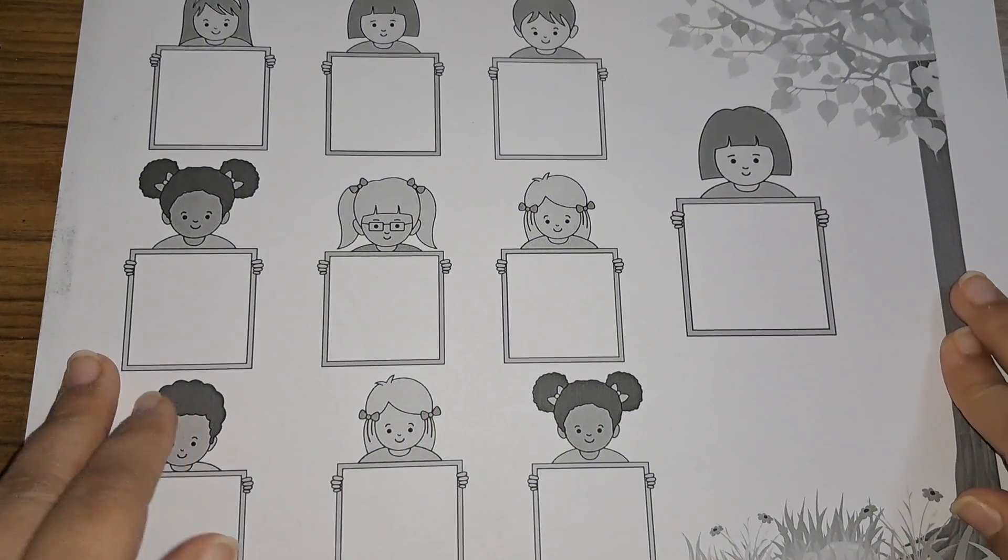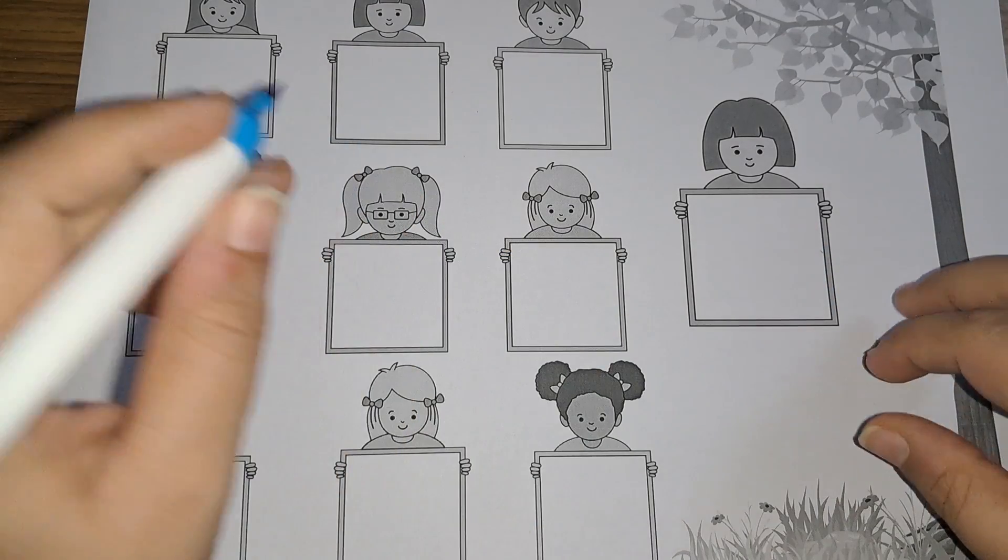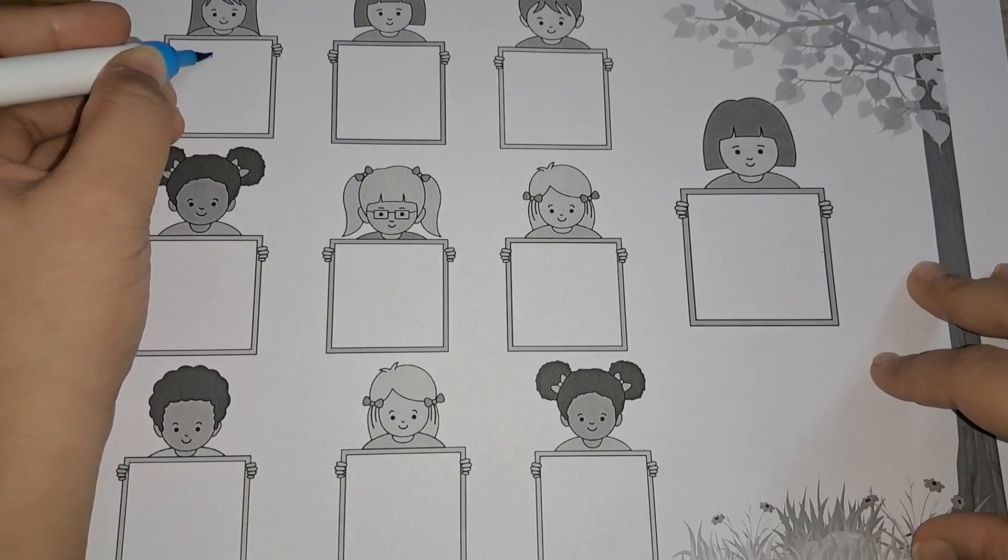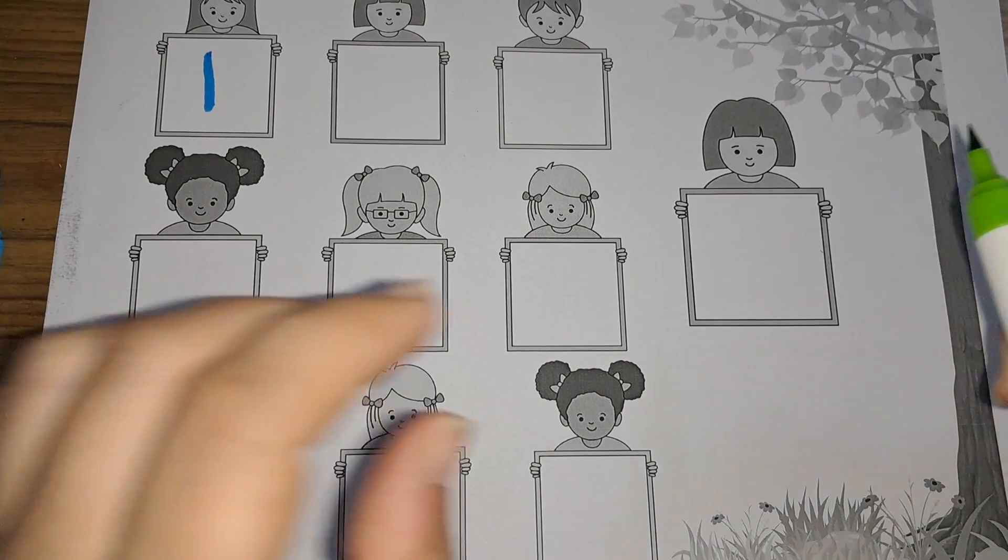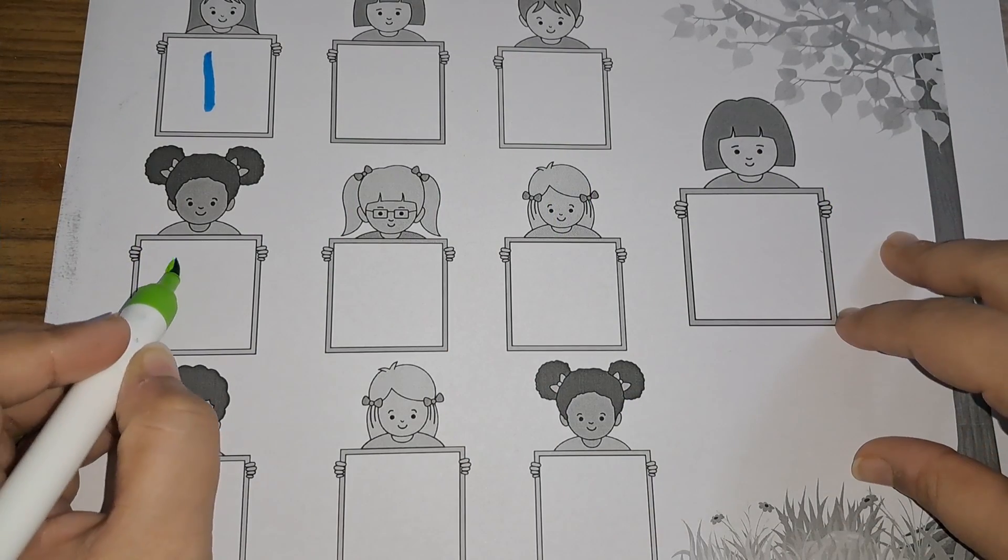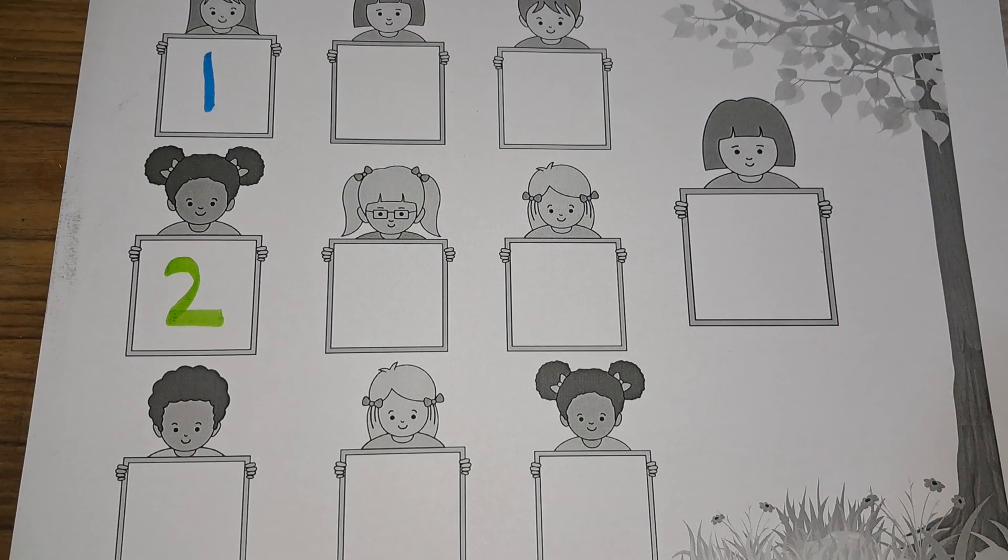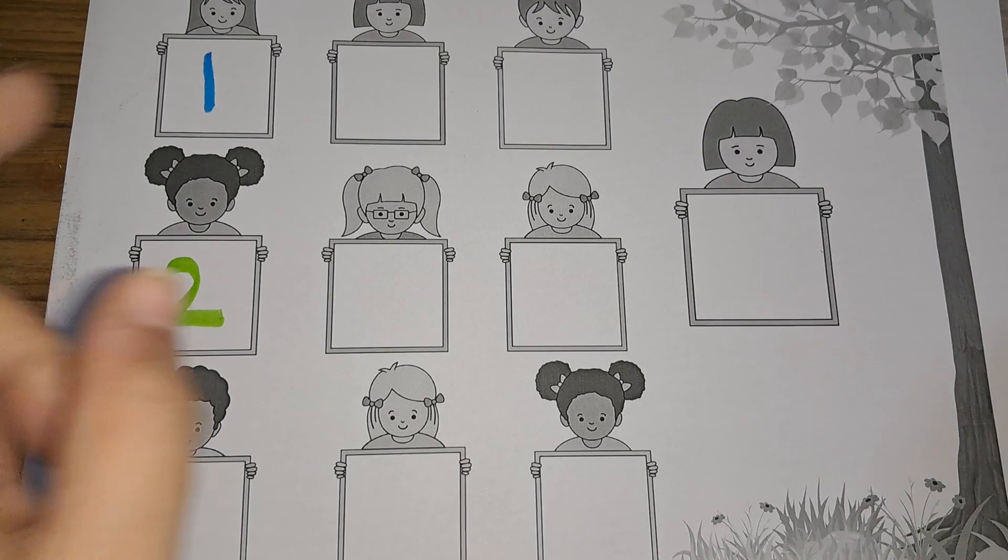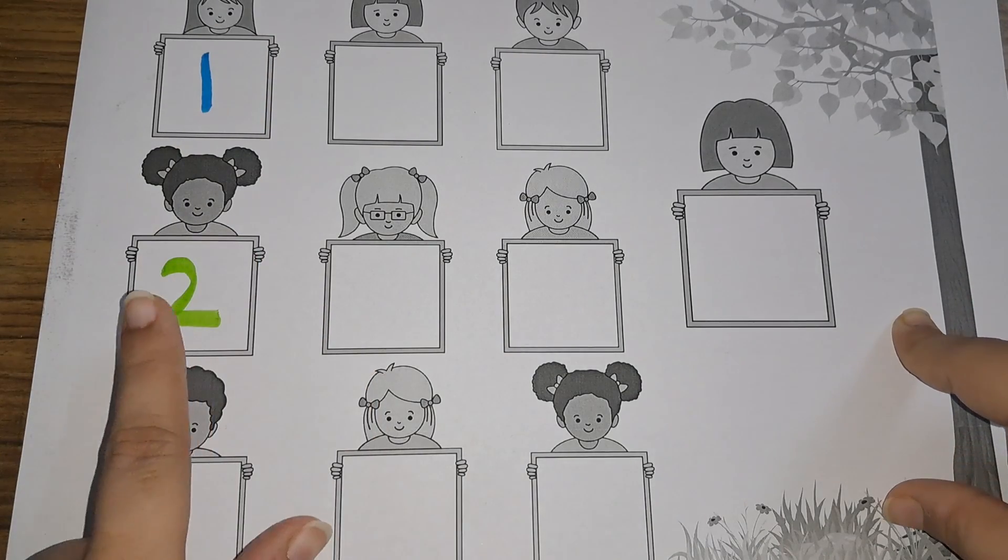One to ten. Number one, number one. Number two, two. The spelling of one is O-N-E, one, two.